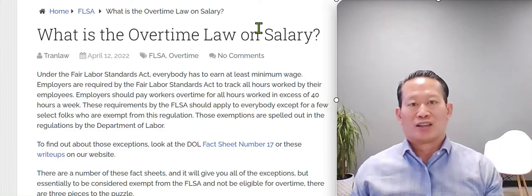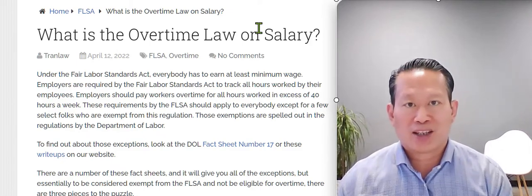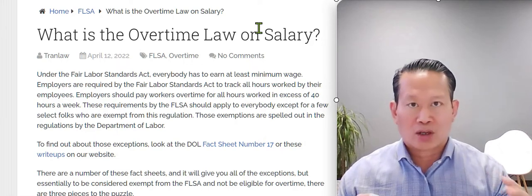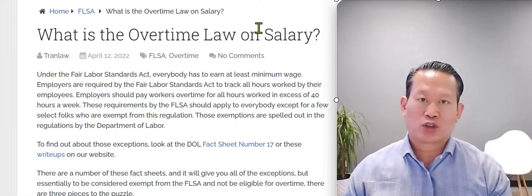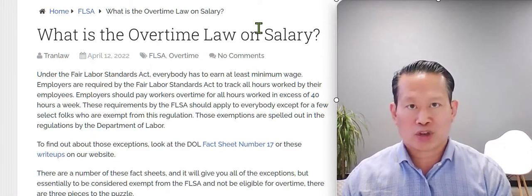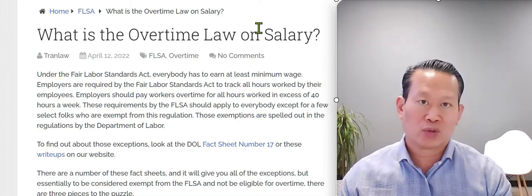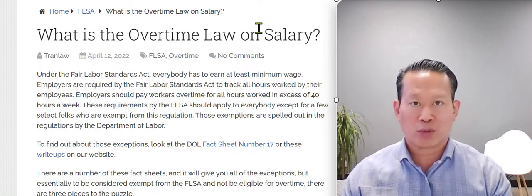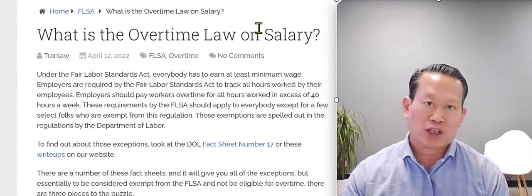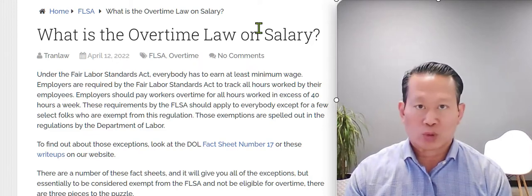When employees work over 40 hours a week, the law requires that they be paid overtime. There is an exception — there are a small group of employees who fall outside of the Fair Labor Standards Act. This exception is called an exemption. There are several categories of exemptions to the overtime requirements of the Fair Labor Standards Act. Individuals that fall under the exemptions are not required to be paid overtime.